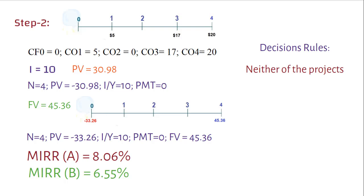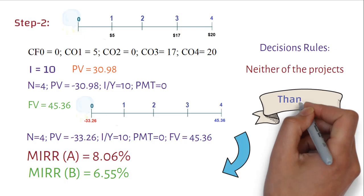If you have a Texas BA2 Plus professional version of the calculator, you can do all this calculation a little bit easier way. To learn how to calculate MIRR using professional version of the calculator, you may consider watching the next video. The link of the video is also given in the description below. I hope to see you in the next video. Thanks for watching.